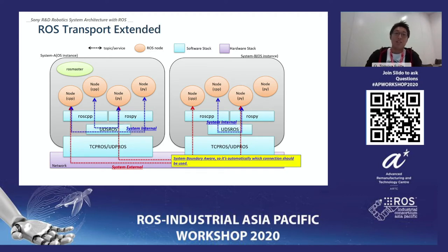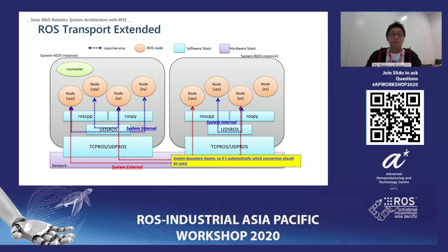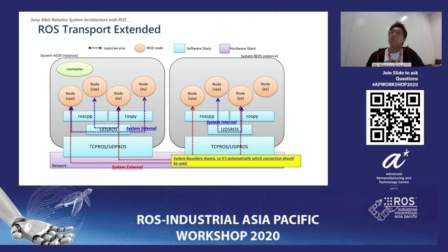So we created a new network class called UDS ROS — you can see it in the middle — which stands for Unix Domain Socket. It is really natural to use Unix domain socket when your connection is localhost on a Linux system. The new component UDS ROS is introduced so that if the communication is system-internal, it uses Unix domain socket only. When it has to go beyond the network, it will use TCP automatically.